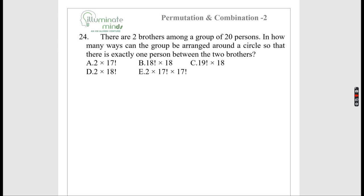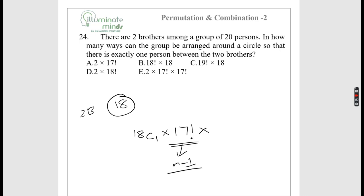20 people sit around a circle such that exactly one person sits between two brothers. Select that middle person in 18C1 = 18 ways. Treat the two brothers and the middle person as one group — now 18 entities sit in a circle in 17! ways. The two brothers can swap in 2 ways. Answer = 18 × 17! × 2 = 18! × 2. Option T is correct.